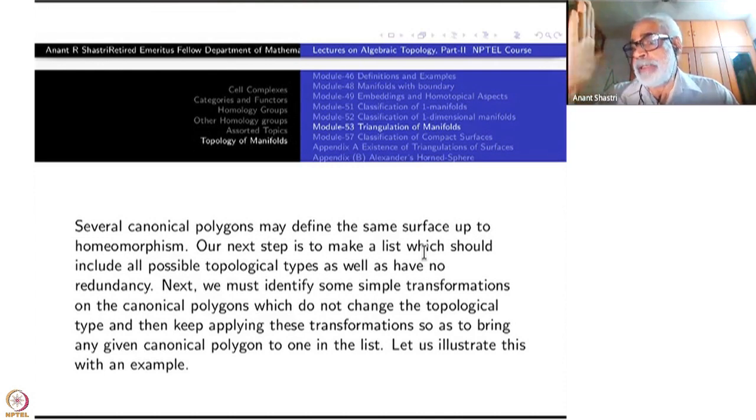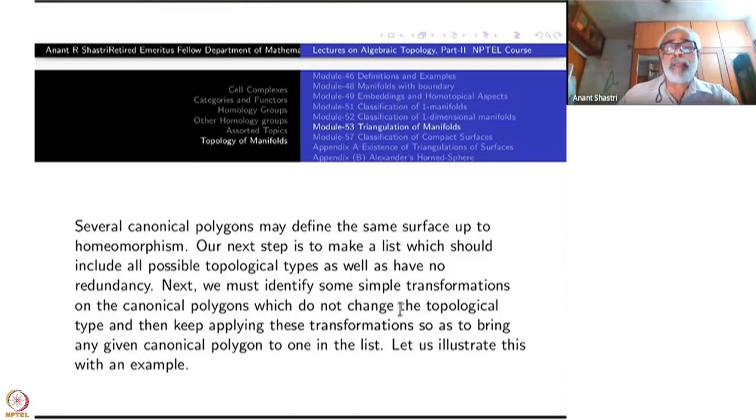So first we propose a list and then we say this is the list. That means we have to prove it. But let us now illustrate the point that two different canonical polygons, different means what now? Cyclically different. A, B, C, D, sorry. A, B, C, D. Let us take this sequence. These two are the same because cyclically they are the same. That is not the point.